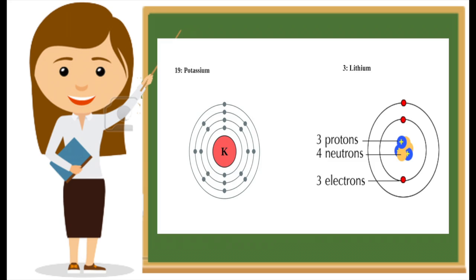If the electrons are closer to the nucleus, then they need less energy than the ones farther away from the nucleus. The more protons there are in an atom, the more electrons an atom needs to cancel.